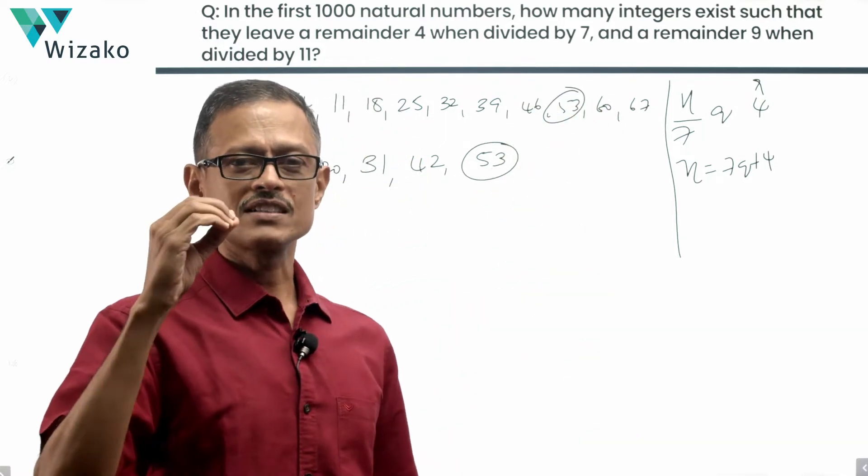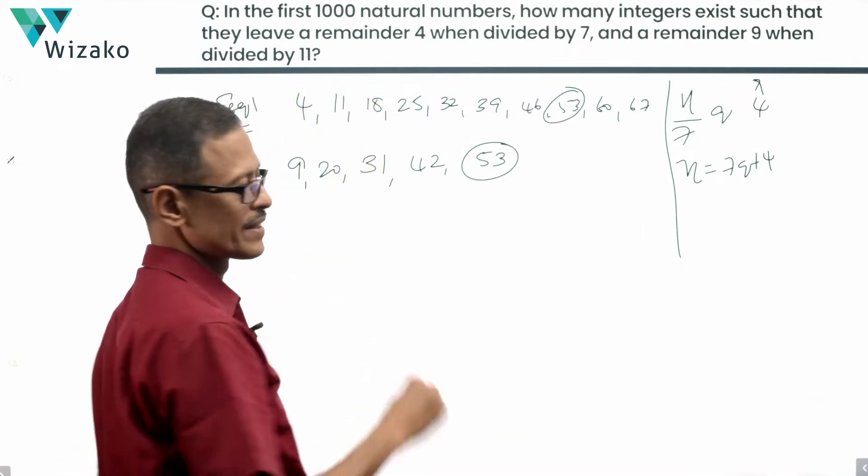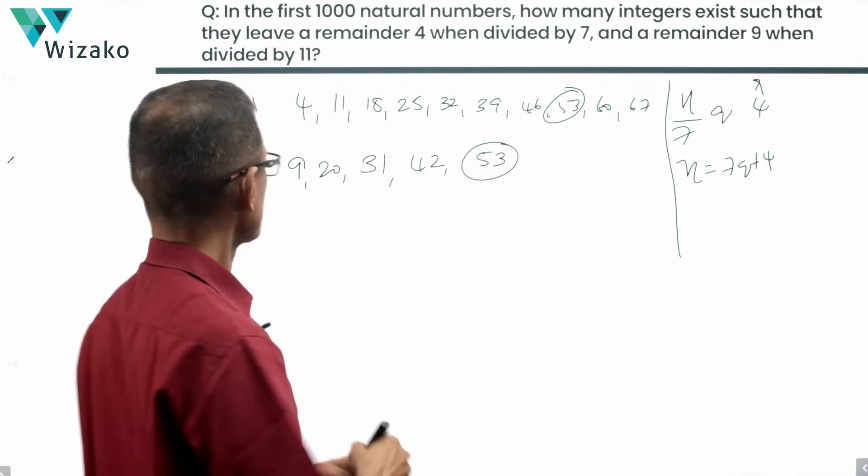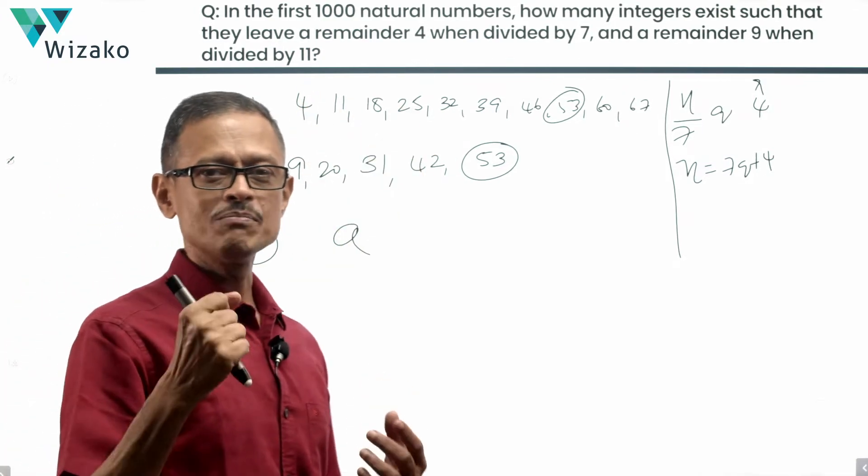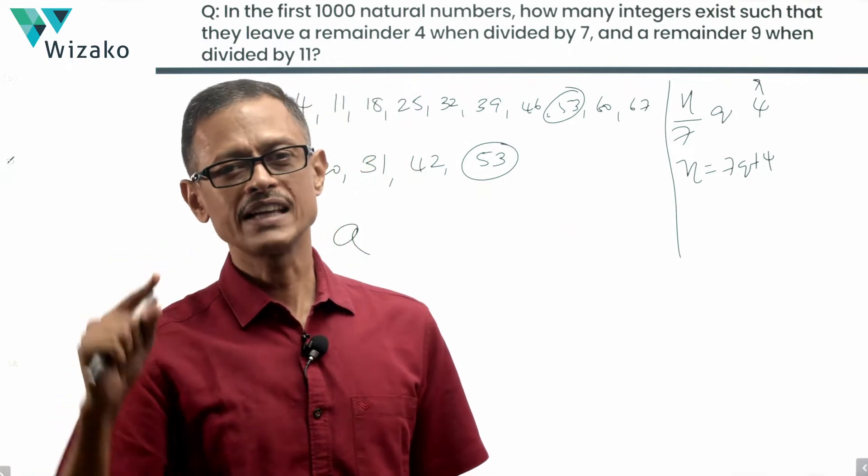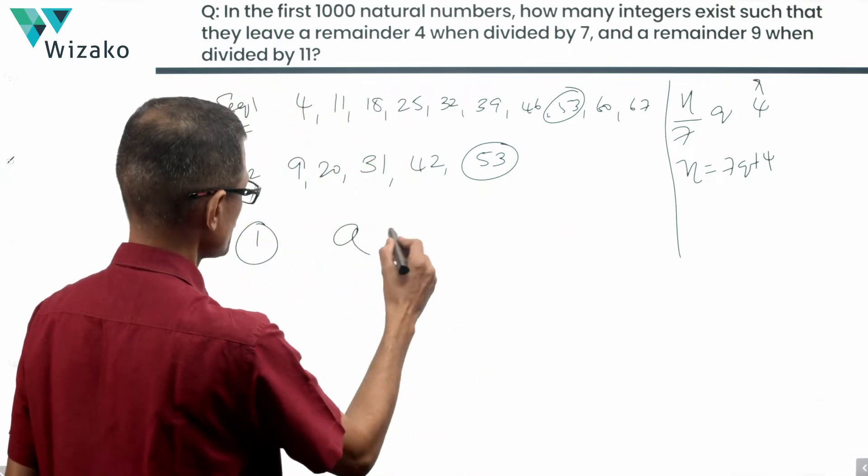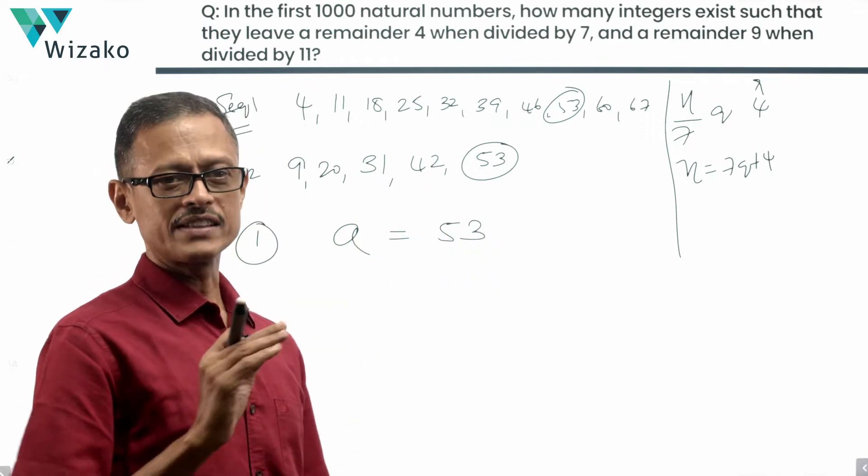So the first step is computing. The first term that is common to both the sequence, that happens to be 53. So step one is done. It's the first term of our sequence, a number that leaves a remainder of 4 when divided by 7 and a remainder of 9 when divided by 11. Such a number, the first such number, which is a positive integer, which is a natural number is 53.